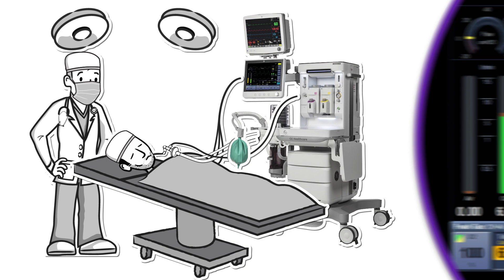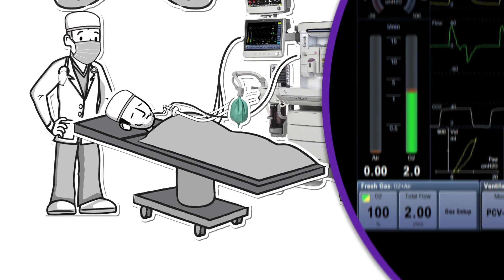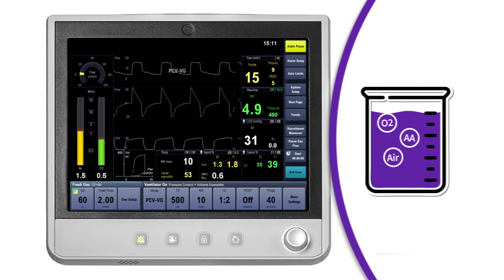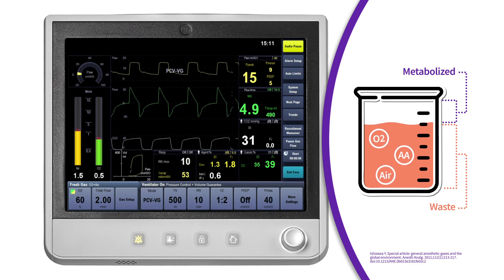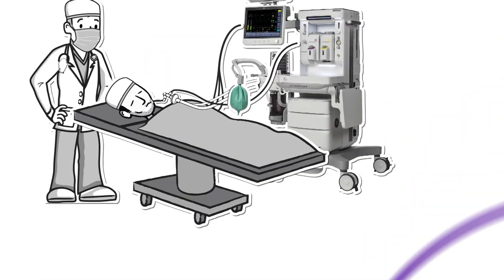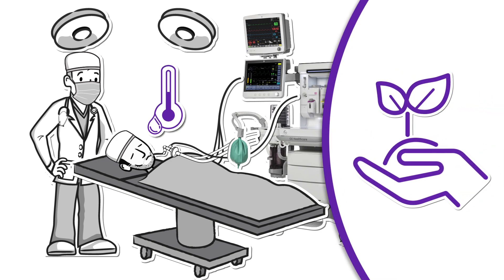Today, many anesthesia providers adjust their fresh gas flow rate to meet the patient's oxygen consumption. Typically, patients undergoing anesthesia only metabolize a small percentage of the anesthetic gas that an anesthesia machine delivers, causing flow rates to be higher than what the patient actually needs, creating waste. By lowering fresh gas flows, it helps to add heat and humidity to the patient breathing circuit to help maintain patient temperature and to reduce the environmental impact of anesthetic agent use.